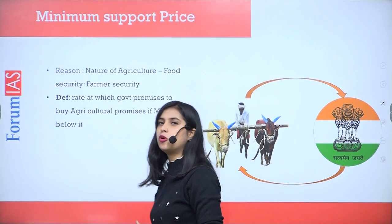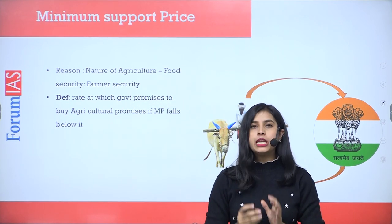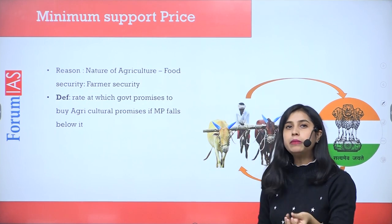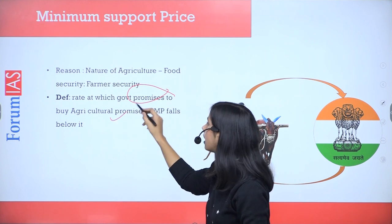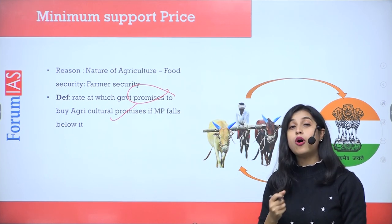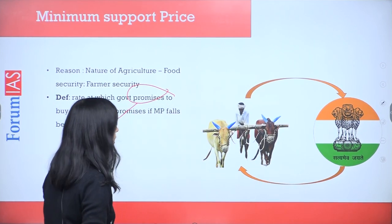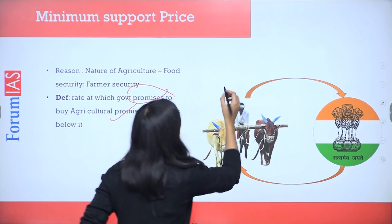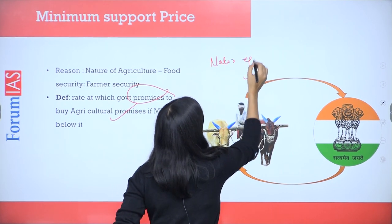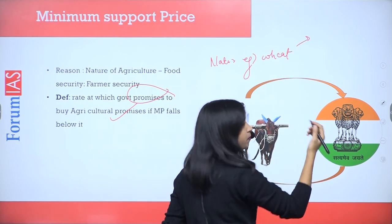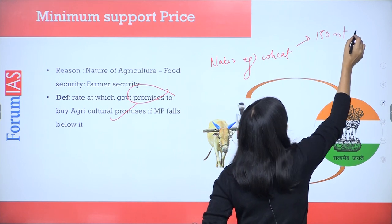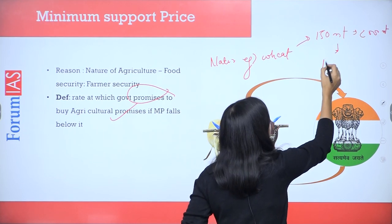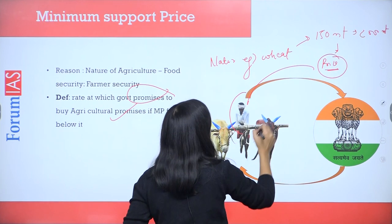Minimum support price is the minimum price that is promised to the farmer by the government in case the price of a particular commodity falls in the market. To understand why MSP is needed, we need to understand the nature of agriculture. If wheat production all of a sudden grows too much — say demand is 150 million tons but we grow 200 million tons — then with that extra 50 million tons produced, the price will crash and the farmer will be at a loss.